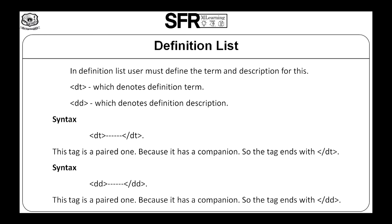Here is the syntax of Definition Term. The DT tag is a paired one because it has a companion, so the tag ends with slash DT. Here is the syntax for Definition Description. The DD tag is a paired one because it has a companion, so the tag ends with slash DD.